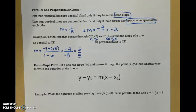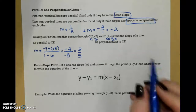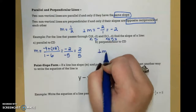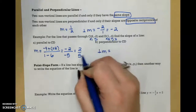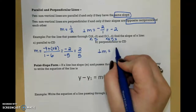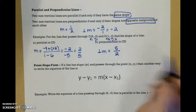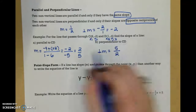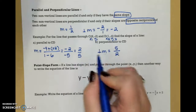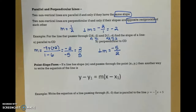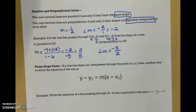Now if I want to find a slope perpendicular to CD, I flip my fraction upside down and I change the sign. It was positive, so my perpendicular slope is going to be negative 5 over 2.